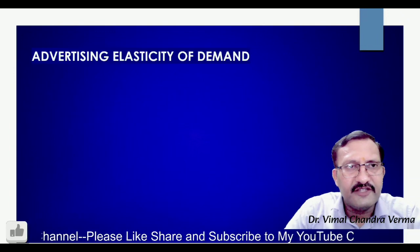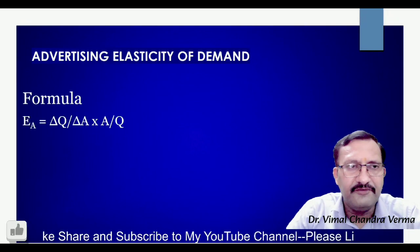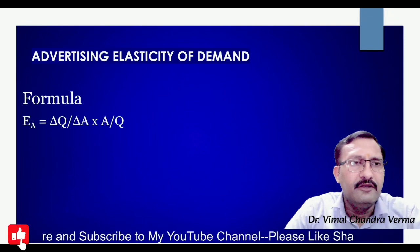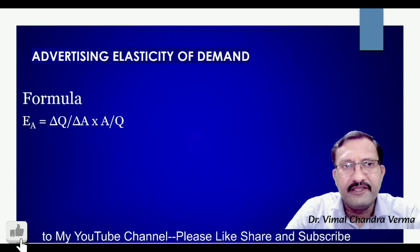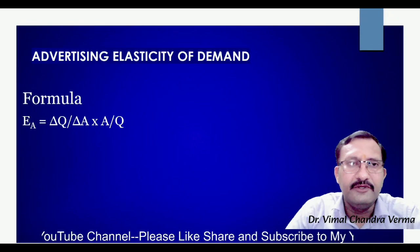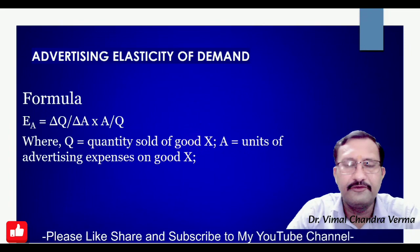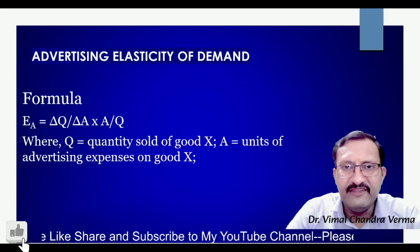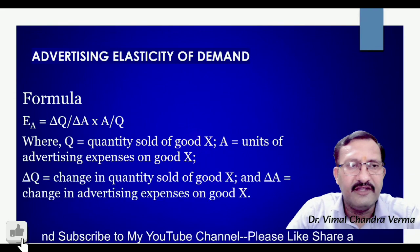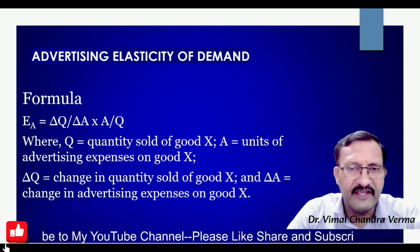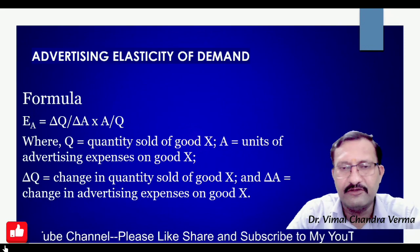Now let us understand how we can calculate advertising elasticity of demand. The formula is very simple. Advertising elasticity of demand equals delta Q upon delta A, multiplied by A upon Q, where Q is the quantity sold of good X, A is the units of advertising expenses on good X, delta Q is the change in quantity sold of good X, and delta A is the change in advertising expenses on good X.